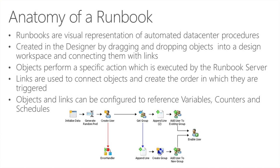Links ensure that activities and objects are triggered in the correct order, connecting those objects together. For example, the 'Create User' activity — the third from the left on screen — will create an Active Directory user. Depending on the output, if successful or not, it may go in a different direction. The red link leads to error handling when not successful, and if successful, it goes to the 'Get Group' activity. You can use variables, counters, and schedules within those links.